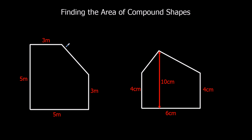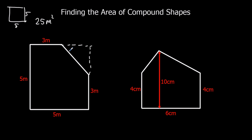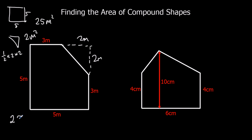Here we've got another rectangle and a triangle — actually it's a square and a triangle. So it's 5 times 5 for the square, which is 25 meters squared. The triangle dimensions are 2 meters and 2 meters, because 3 and 2 make 5 on each side. So half base times height: half times 2 times 2. Half times 2 is 1, and 1 times 2 is 2 meters squared. So 25 take away 2 is 23 meters squared.